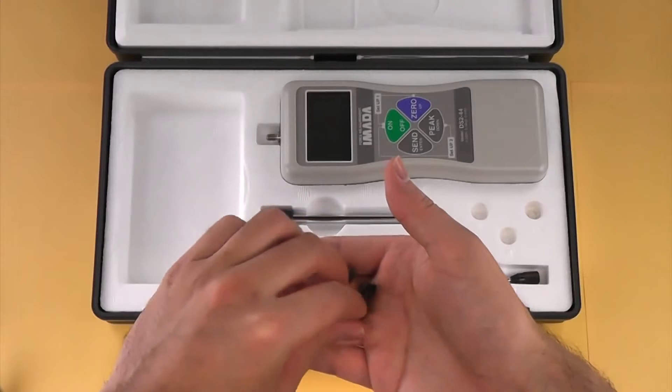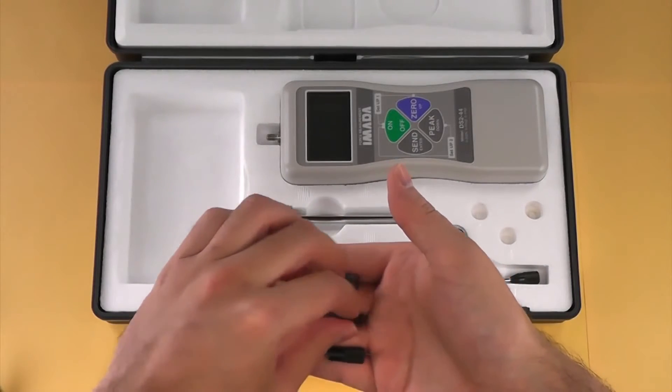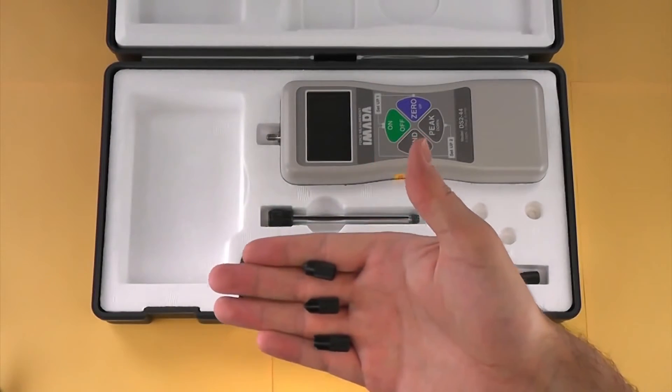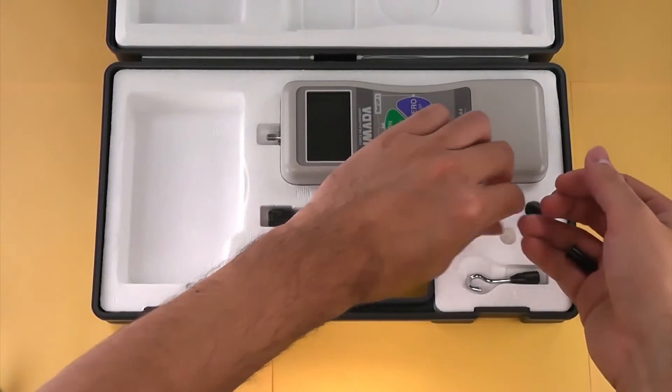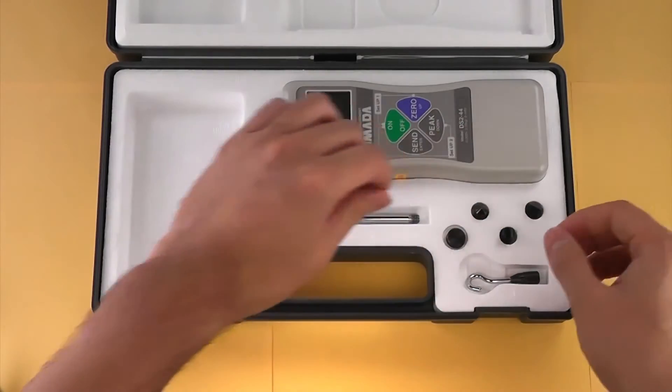The DS2 Force Gauge Kit also includes a chisel tip, conical tip, and notched tip attachments. We also have many attachments for more specialized applications. Please visit our website for more information.